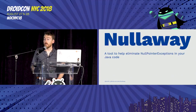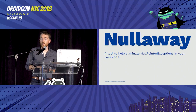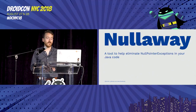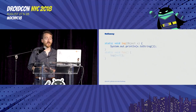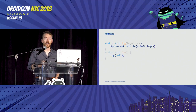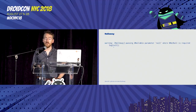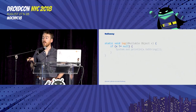NullAway helps solve the billion-dollar null pointer mistake at compile time. It's fast, can run on every build, and has little overhead. By default, NullAway assumes all unannotated parameters are non-null — so if you send null to a method that expects a non-null parameter, NullAway alerts you at compile time and stops the build. You can fix the issue by adding an annotation, but NullAway would still fail on the usage unless you also added a null check prior to using the variable — similar to Kotlin.